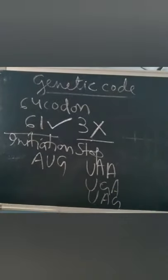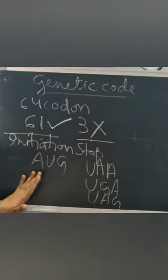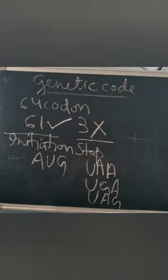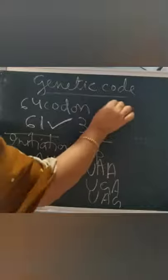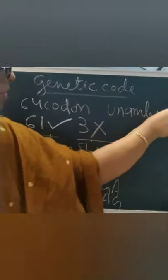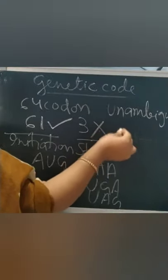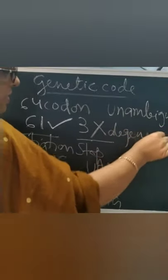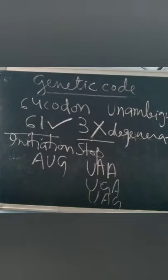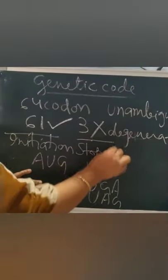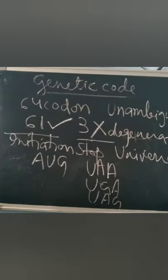Stop codons do not code for any amino acid — they actually stop the translation process. AUG is the initiation codon. One codon codes for one amino acid — that is why it is called unambiguous. When many codons code for one amino acid, it is called degenerate. Because of this degeneracy, mutations are hidden and cannot express. Genetic code is universal — from bacteria to human beings, the same code is followed. AUG has a dual function: it codes for methionine and also acts as an initiation codon.